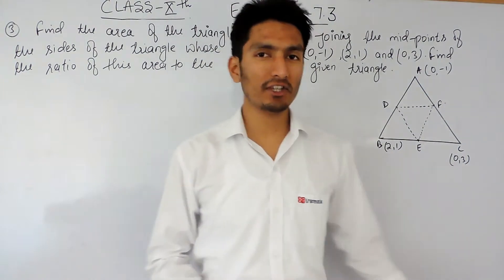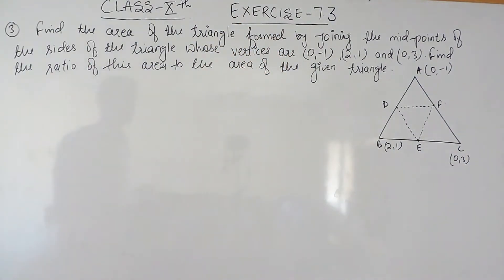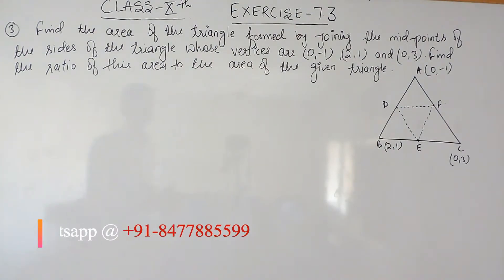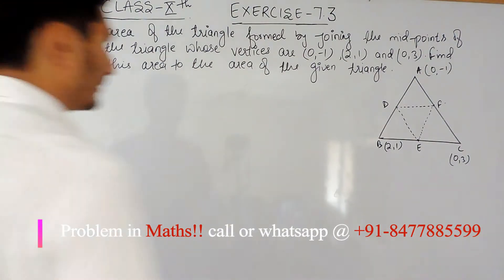Hello everyone. In this video we are going to solve question no. 3 of exercise 7.3. The question says: find the area of the triangle formed by joining the midpoints of the sides of the triangle whose vertices are (0, -1), (2, 1) and (0, 3). We also have to find the ratio of this area to the area of the given triangle.